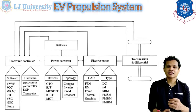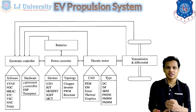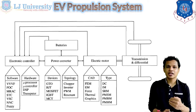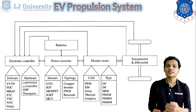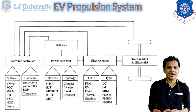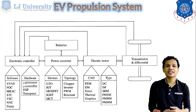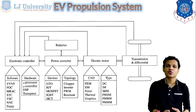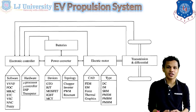The electric motor types include DC motor, induction motor, SR motor, PM motor, and synchronous motor. The selection of the motor is done by considering the different design considerations for the electric vehicle. This is the basic propulsion system that can be used for the electric vehicle across the different types of motors.